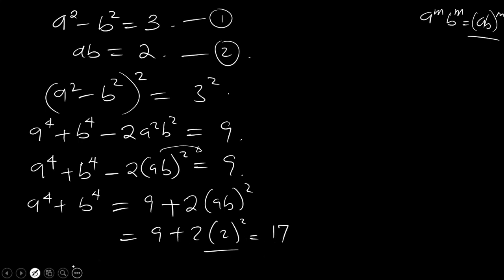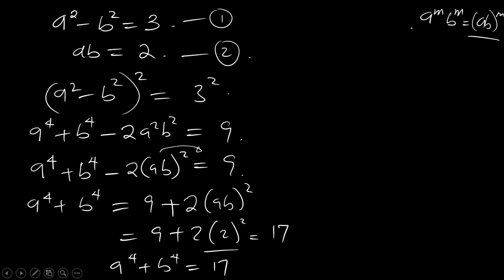So 8 plus 9 is 17. We have gotten a to the power 4 plus b to the power 4 equal to 17.